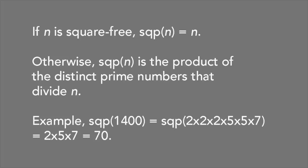And the square-free part of 1,400 equals SQP of 2 times 2 times 2 times 5 times 5 times 7, which is 2 times 5 times 7, or 70.